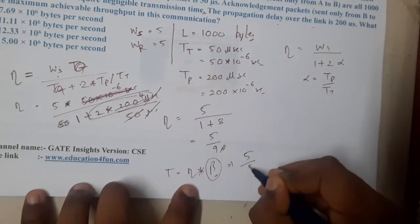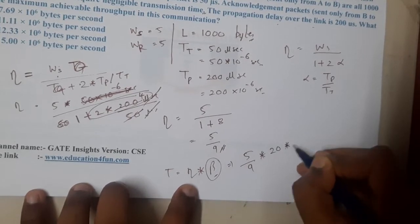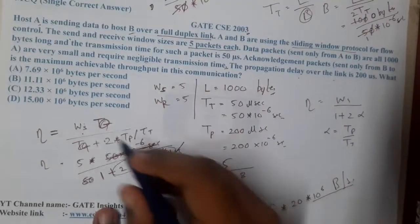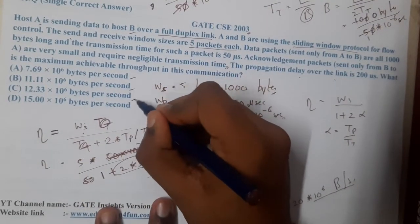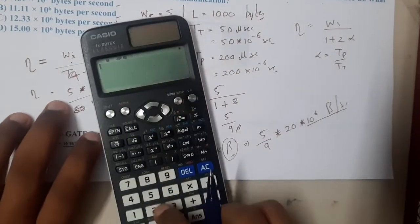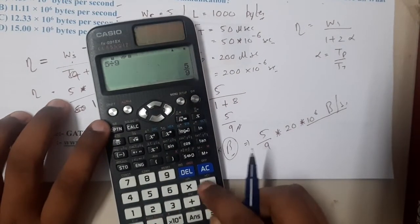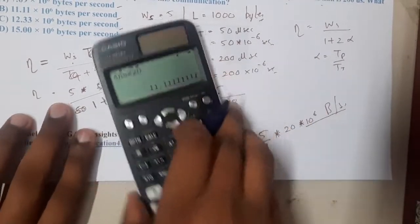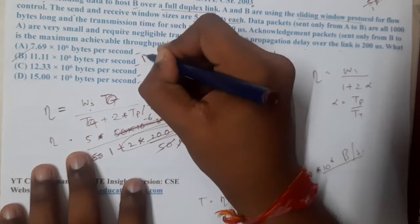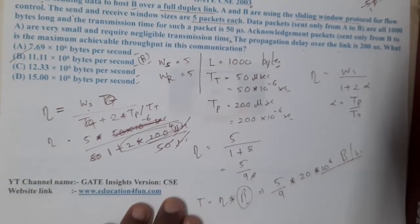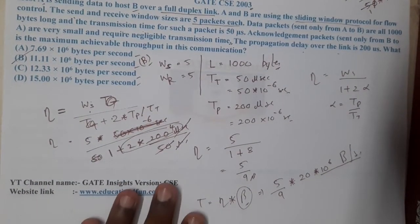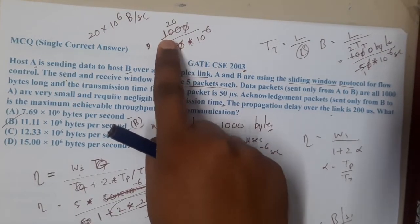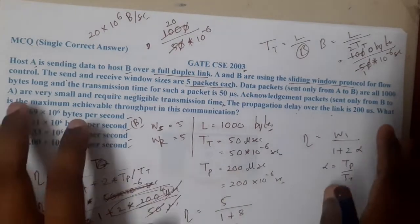Now, throughput = efficiency × bandwidth = (5/9) × 20×10⁶ bytes/s. Calculating 5/9 × 20 gives 11.111..., so throughput = 11.11×10⁶ bytes per second. This matches option B.